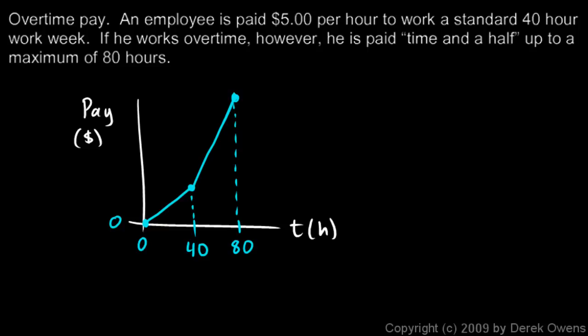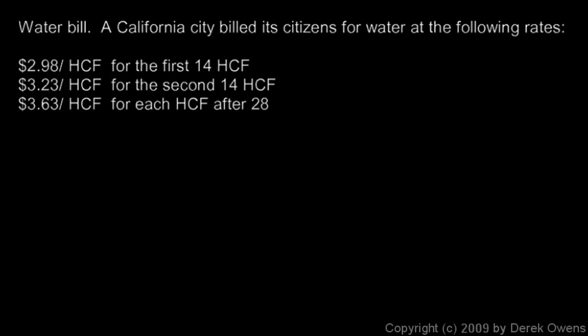You could use these numbers, $5 and the time and a half $7.50, to calculate these particular pay values, to get the amounts that you would be paid for working different numbers of hours. But you see, this function clearly has this point here at which the definition changes. We think of our pay defined one way when our time is less than 40 hours, and our pay is defined another way when the time is greater than 40 hours.